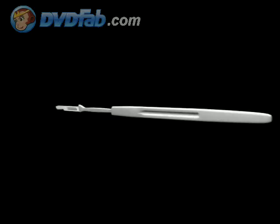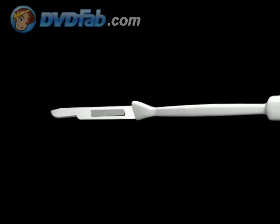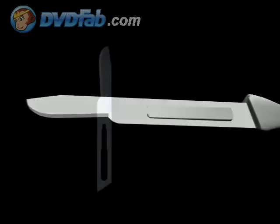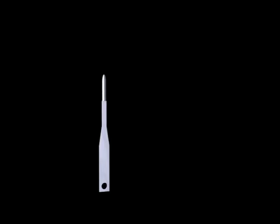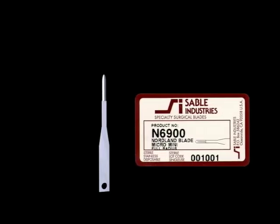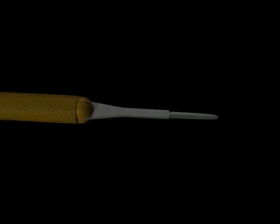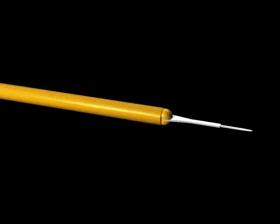Here you can see the typical 7A scalpel handle with a 15 blade. Using a straight scalpel necessitates releasing incisions and larger incisions. You can get a sense of the large size of the classic 15 scalpel when we compare it to the new micro scalpel blades. This particular blade is the Nordland 6900 blade. The mounting of the scalpel blades is quite different from that of traditional blades — the newer scalpel blades mount on a rounded handle.